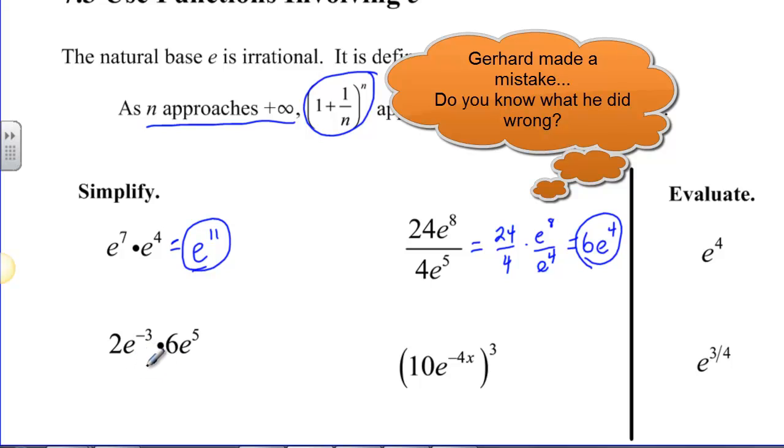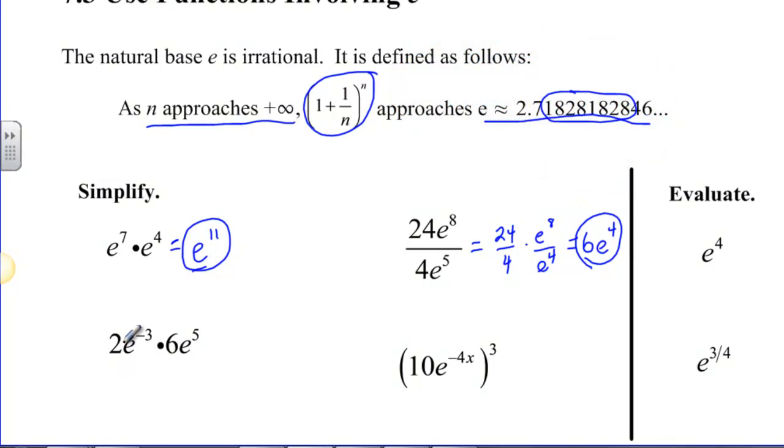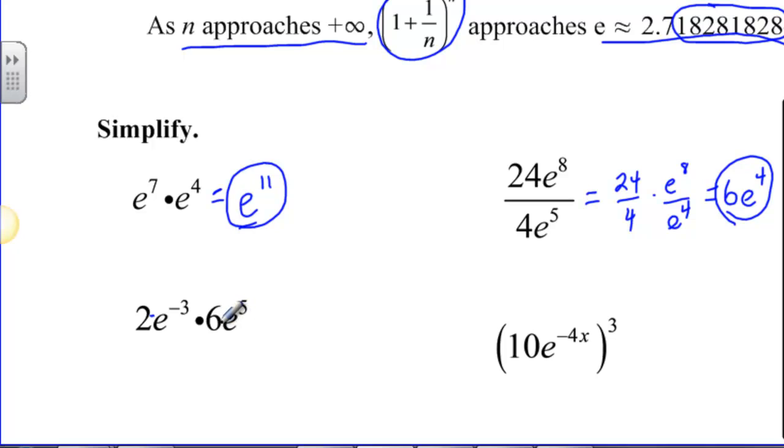Over here we have 2e to the negative third times 6e to the fifth. And we're going to split them up or group them, because everything's multiplication. We actually are doing 2 times e to the negative third times 6 times e to the fifth. And so I can really make this 2 times 6 and e to the negative third times e to the fifth. 2 times 6 is 12 and when I have like bases I add the exponents and that gives me e squared. So 12e squared would be my simplified form there.